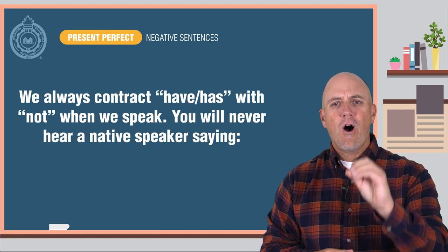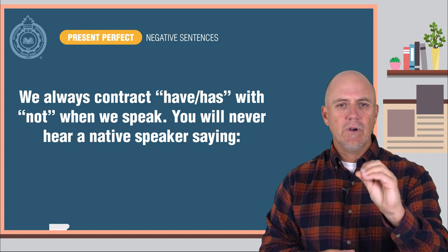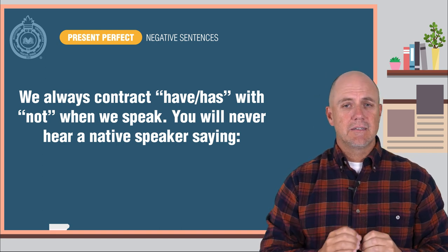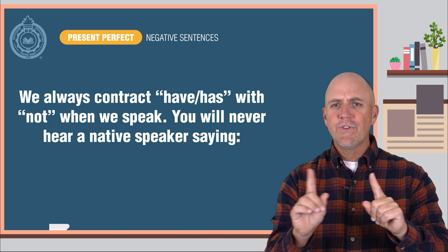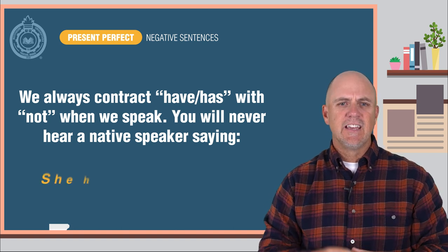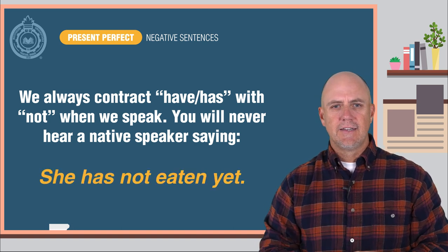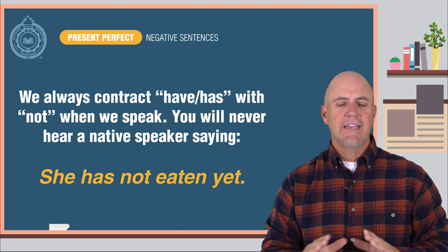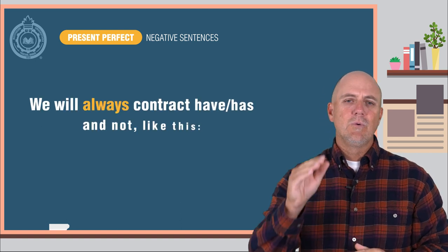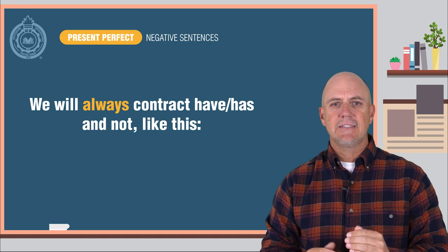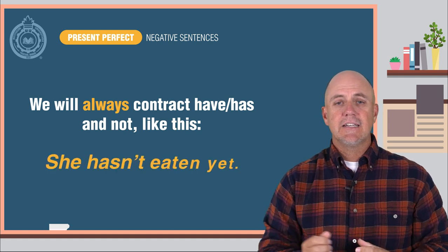Next, we always contract have or has with not when we speak. You will never hear a native speaker saying, she has not eaten yet. That takes too long to say and sounds far too formal. We will always contract have, has, and not like this: She hasn't eaten yet.